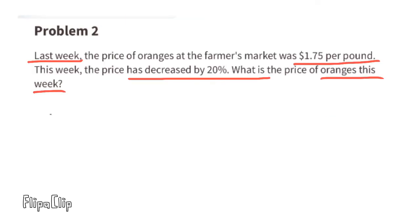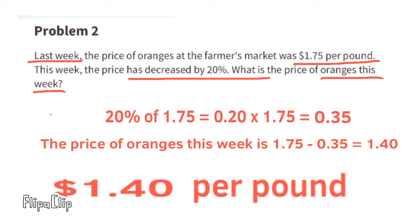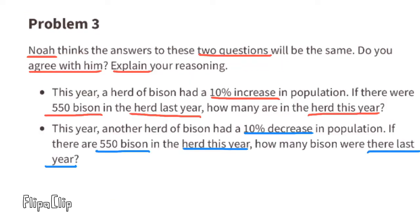Last week, the price of oranges at the farmer's market was $1.75 per pound. This week the price has decreased by 20 percent. What is the price of oranges this week? 20 percent of $1.75 equals 0.20 times 1.75. 20 percent of $1.75 is 35 cents, so we need to subtract 35 cents from $1.75. This week the price of the oranges is $1.40 per pound.